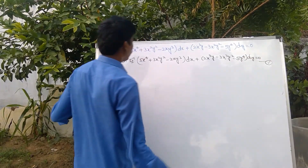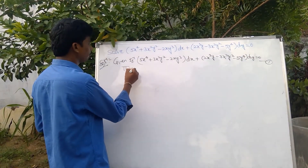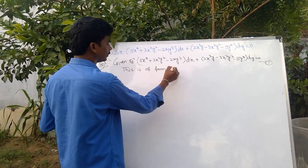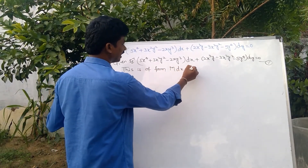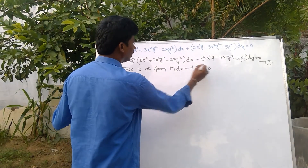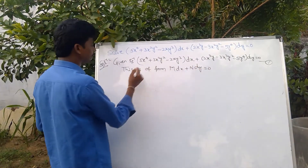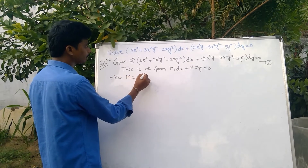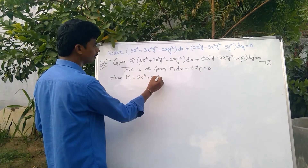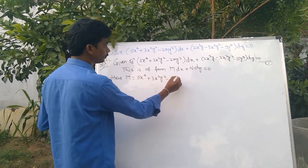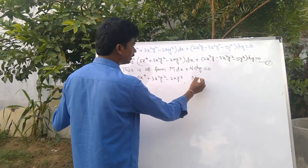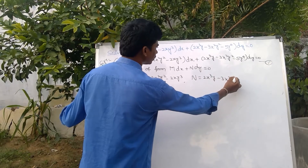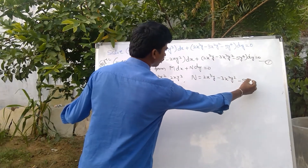This is of the form M dx + N dy. Here M = 5x⁴ + 3x²y² − 2xy³, and N = 2x³y − 3x²y² − 5y⁴.